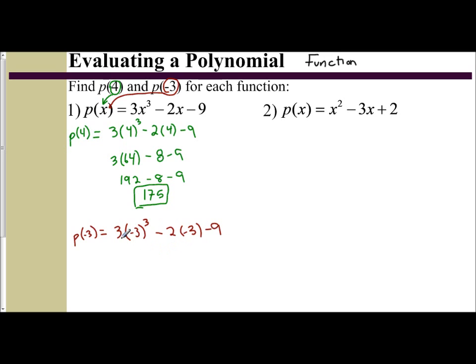And then we just focus on this right side and evaluate the expression. So (-3)³ is -27. So I have 3 times (-27). -2 times (-3) is a positive 6, minus 9. 3 times (-27) is -81. So you have -81 plus 6, minus 9, which is going to be -84.